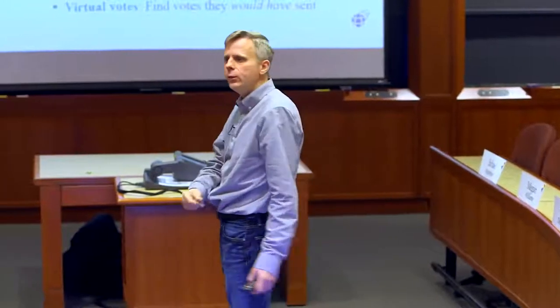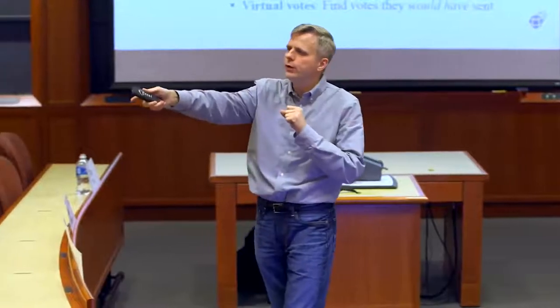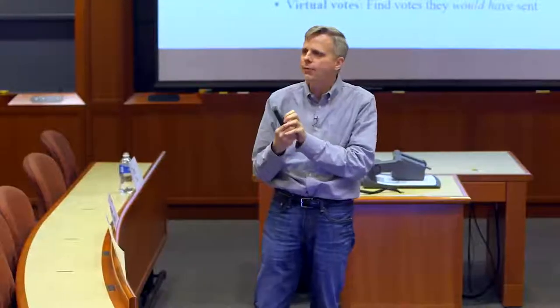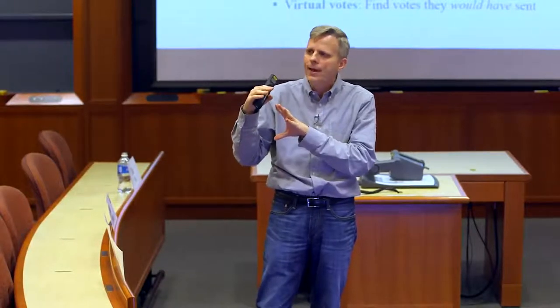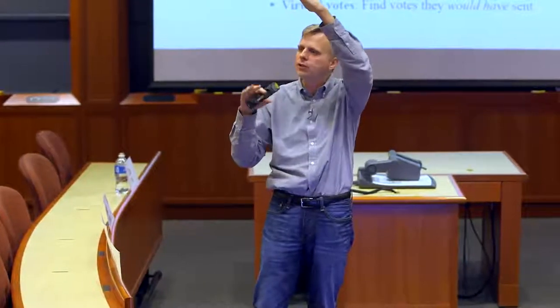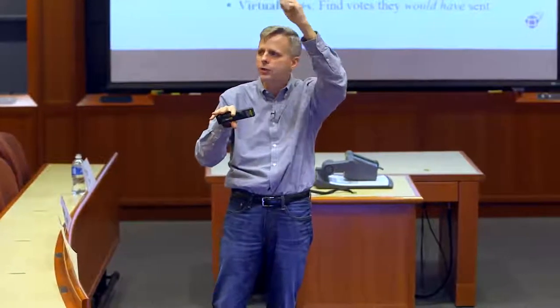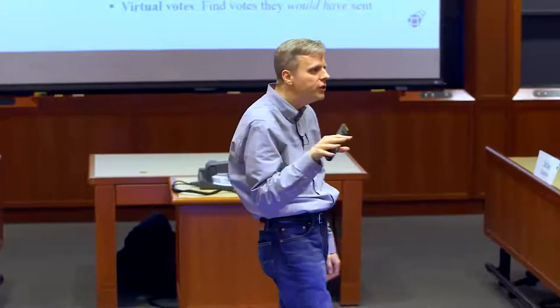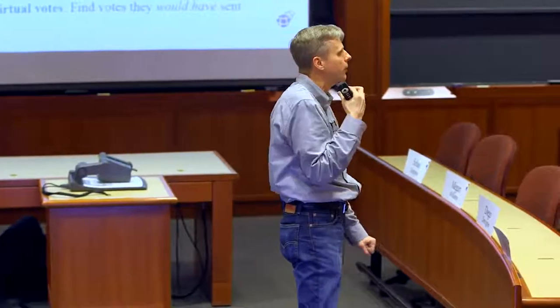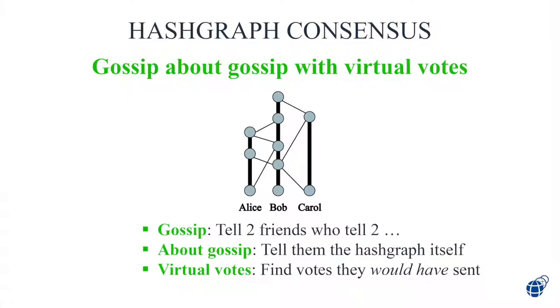Practically, what does this mean? It means whenever you create a transaction, it gets to me very fast because we're using gossip — no leader, no turns, no proof of work math problem to solve. I'm going to get your transaction really fast. I'll pay maybe 1% more bandwidth for the two hashes. Then after a few more transactions, I will just know the order of this one. I don't have to talk to people about the consensus. There's no one person in charge — it's purely internal. I can just see what the consensus is by virtually running one of these old algorithms, but not running it for real.